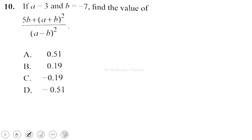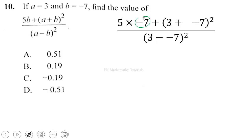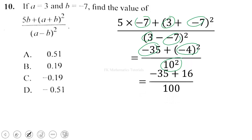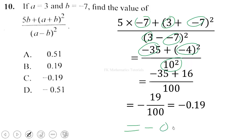Question 10: if a = 3 and b = −7, find the value of (5b + a + b²) / (a − b)². By substitution: numerator = 5(−7) + 3 + (−7)² = −35 + 3 + 49 = ... wait, let me compute: 5b = −35, then −35 + (−4 squared) and (10 squared) gives 16, so −90 over 100 = −0.19. We'll upload the continuation in the next video. Thank you for watching, see you in the next video.